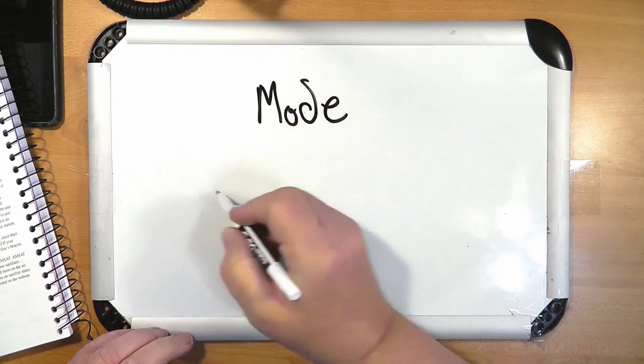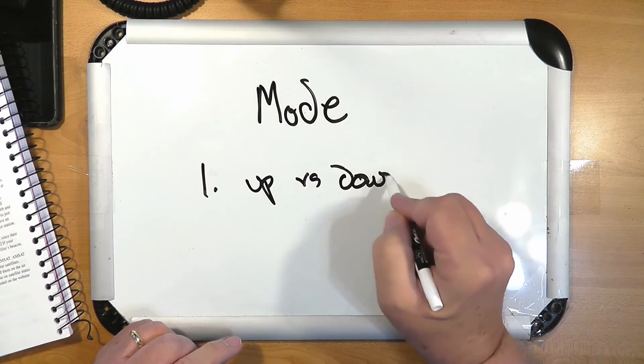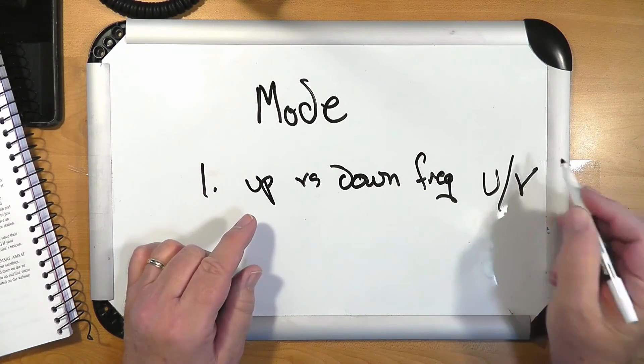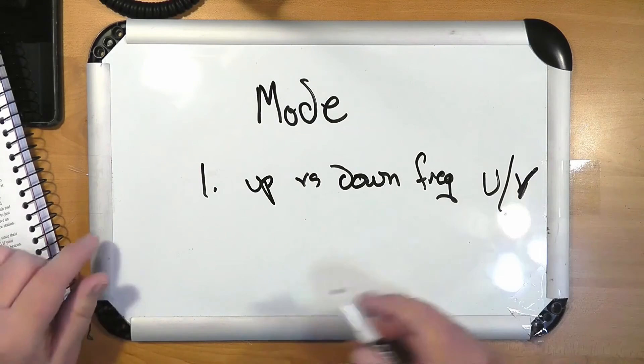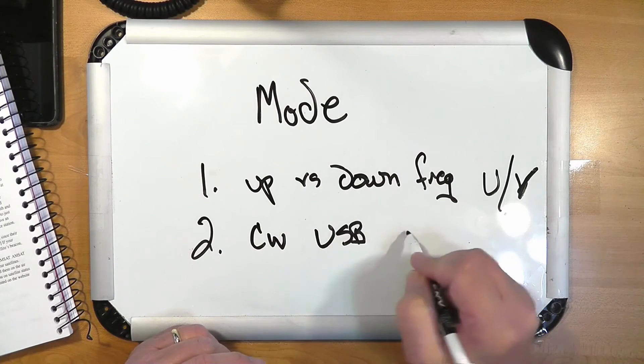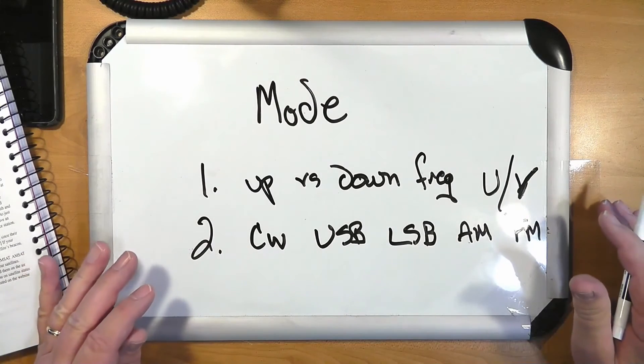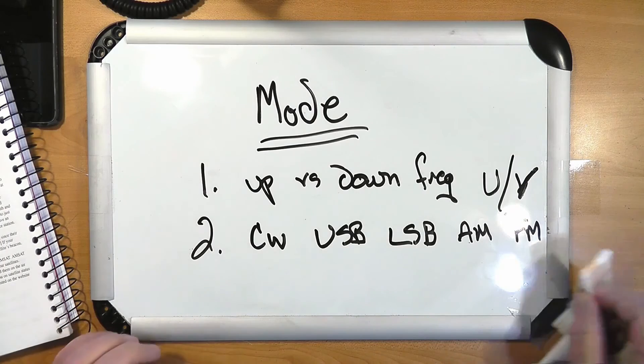Let's talk about another confusing term called mode. Mode has two meanings. Mode one, it's the up versus down frequencies or bands. So, a UV mode satellite goes up on UHF, comes down on VHF, and that's called a mode. The other meaning of the term mode is what we think of normally: CW, USB, LSB, AM, FM, and so on. So, you'll hear this term used in two different ways. Make sure that you know which way that you're trying to look at it. So, mode UV would be up on UHF, down on VHF.